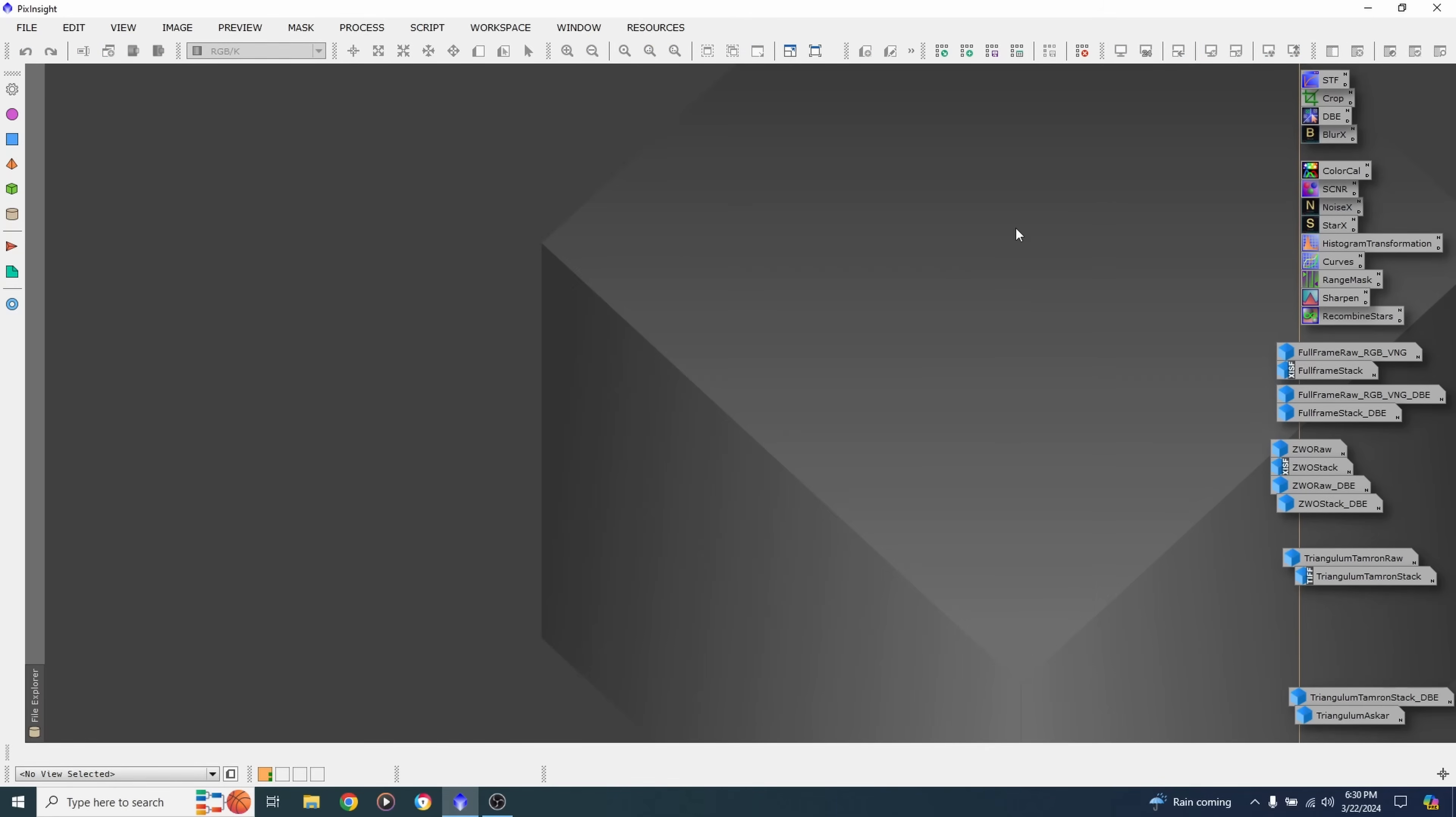Now the final set of images are really what made me decide to get a new telescope and camera. The first set was taken with my Tamron 150-600. I'm trying to shoot the Triangulum Galaxy and that's a really good focal length for that. And first, let's just look at the Tamron. We're just going to go ahead and look at the stacked file.